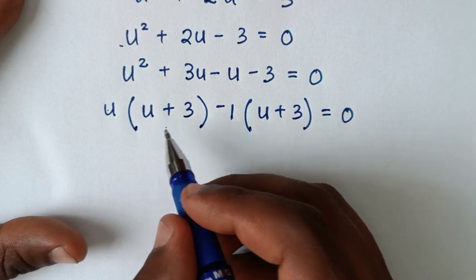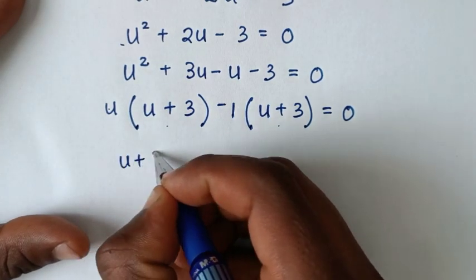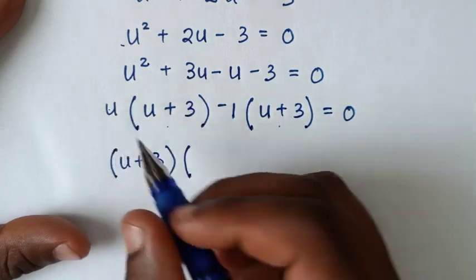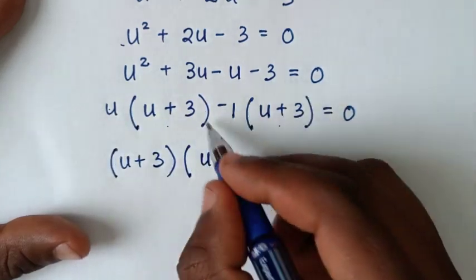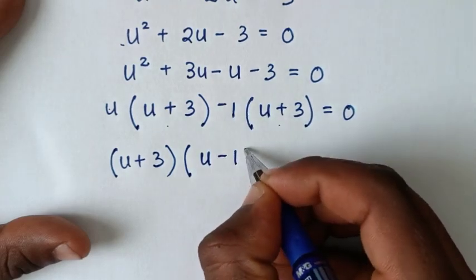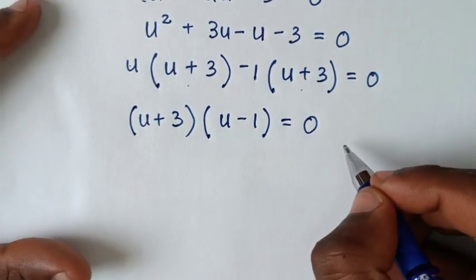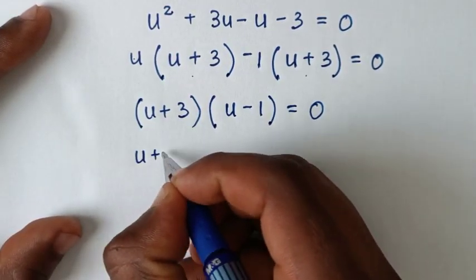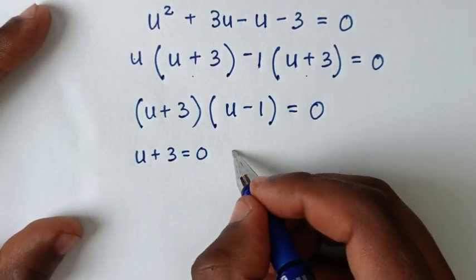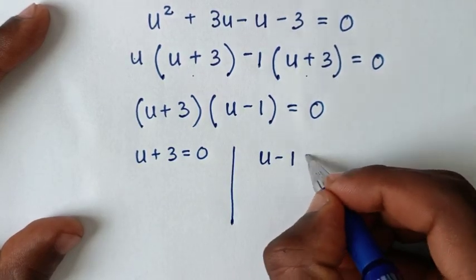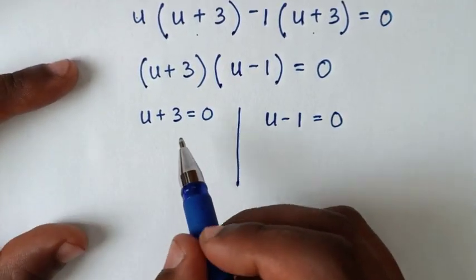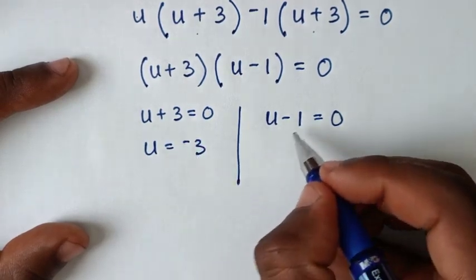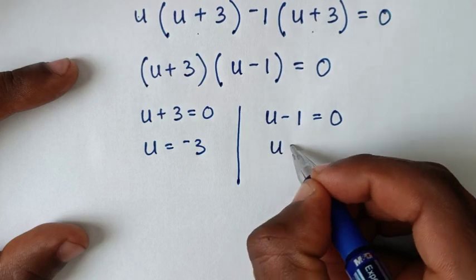Factoring: u is common in the first pair giving u(u+3), then −1 is common in the second pair giving −1(u+3). So (u+3)(u−1) = 0, giving two solutions: u = −3 or u = 1.